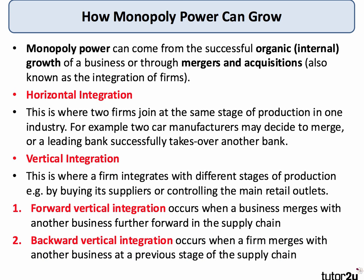So how can monopoly power grow? Monopoly comes from the successful organic growth of a business — in other words the internal growth of a business — or often through merger and acquisition, also known as integration of firms. Horizontal integration is where two firms come together at the same stage of production in the same industry. Two car makers may decide to merge, or two banks may decide to come together, and that can lead to fast growth of market share and monopoly power. Vertical integration is where a firm integrates with another business at a different stage of production. You can either go forward — merging with a business closer to the final consumer in the supply chain — or go backward, merging with a business at a previous stage of the supply chain.